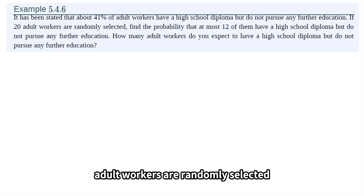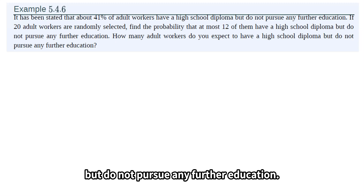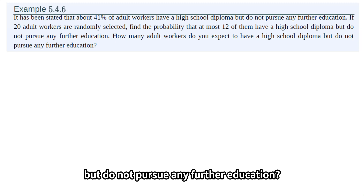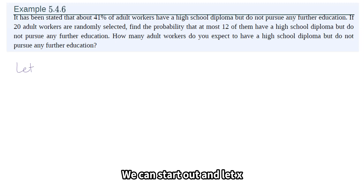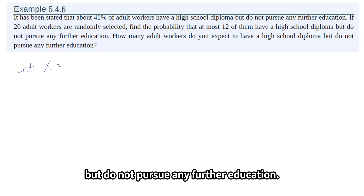If 20 adult workers are randomly selected, find the probability that at most 12 of them have a high school diploma but do not pursue any further education. How many adult workers do you expect to have a high school diploma but do not pursue any further education? This is an example of a binomial distribution. We can start out and let x be the number of workers who have a high school diploma but do not pursue any further education.